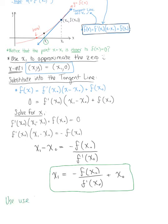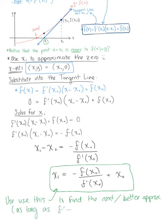We can use this formula to find the next, better approximation, as long as the derivative is not equal to 0 — otherwise it would be undefined. We can go back to our graph and draw a tangent line to the curve at x₁, which produces our next approximation, or in this case the exact value.